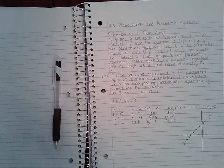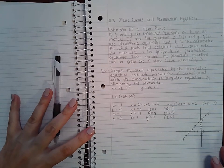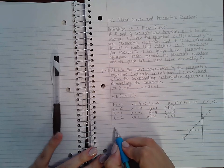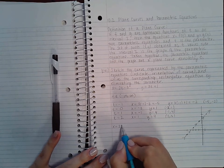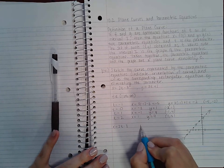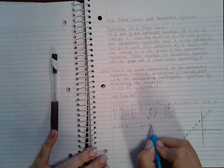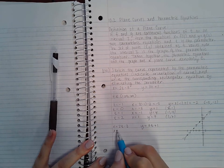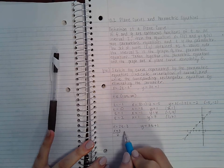What we do there is we take both of the equations, solve for t, and then set both of those equations equal to each other. So here, if I solve for t, I get t = (x + 3)/2. And if I solve for t on this side,